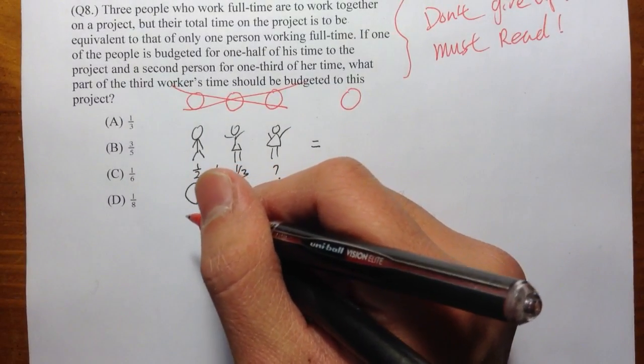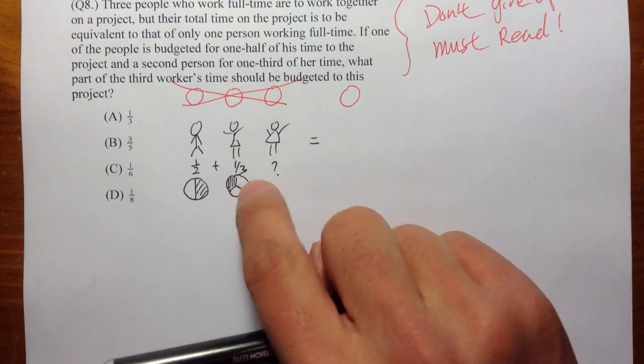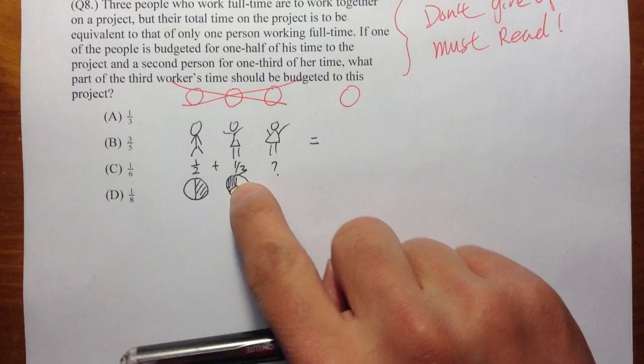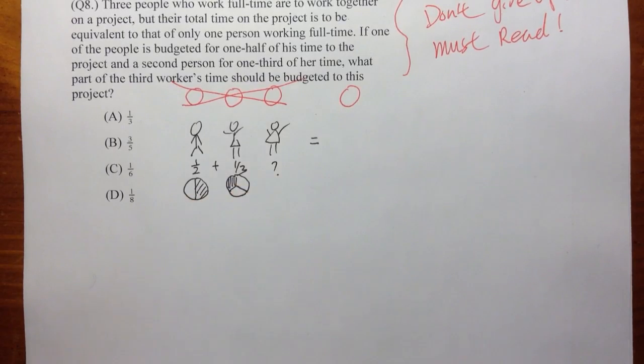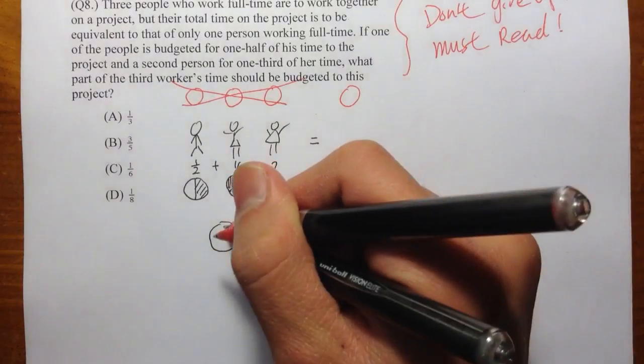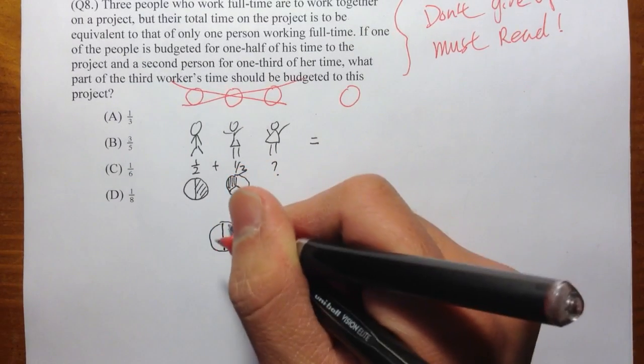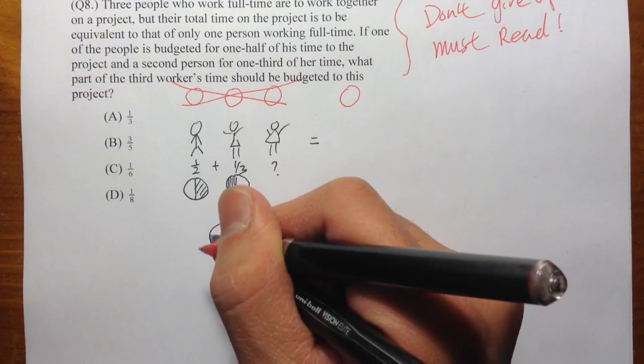So notice that one-half and one-third, they are in different shape. Right? The half of the pizza and a third of the pizza, they are in different shape. But if I kind of just merge these two pictures together into one picture, the first person takes this half already, and then the second person takes this part.